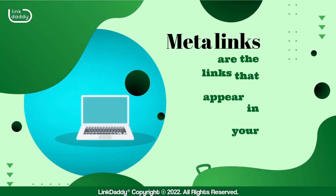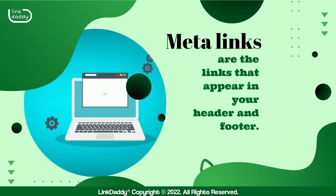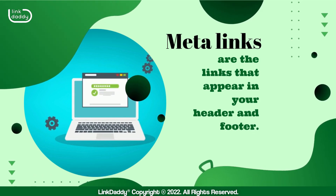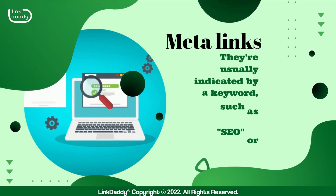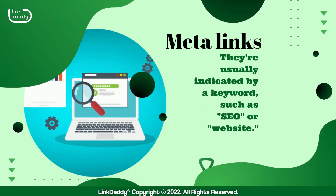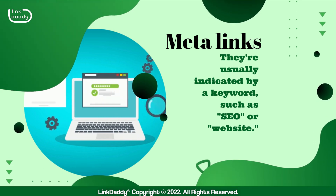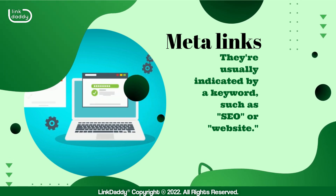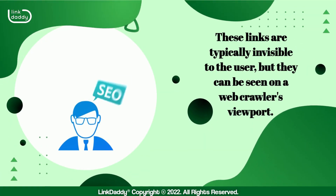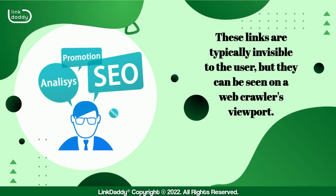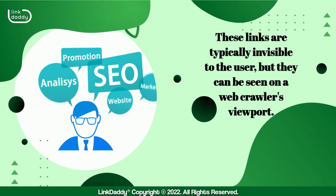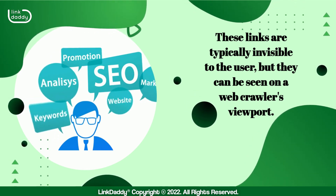Meta links are the links that appear in your header and footer. They're usually indicated by a keyword, such as SEO or website. These links are typically invisible to the user, but they can be seen on a web crawler's viewport.